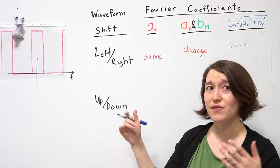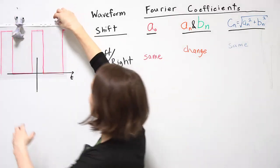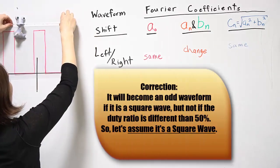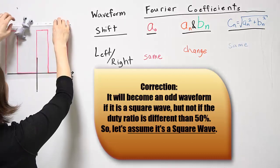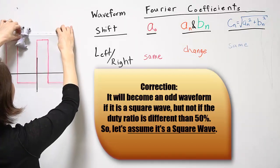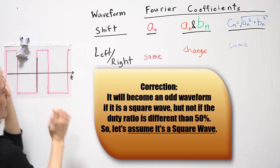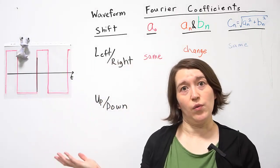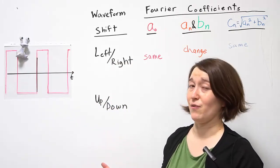Let's say we want to shift downward. So let's say we had this waveform and we want to shift it downward because we want to make it an odd waveform. So now it's an odd waveform, which is a little bit easier to calculate the coefficients.